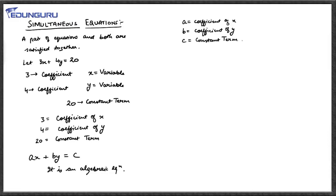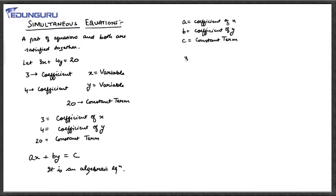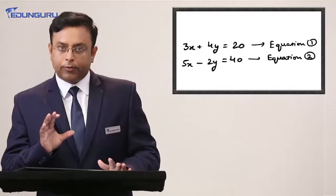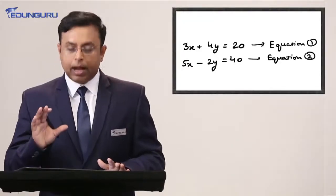These are the details of an equation and its various terminologies. When it comes to simultaneous equations, since simultaneous means together, there must be another equation. I have already written 3x plus 4y is equal to 20. Let me write another one: 5x minus 2y is equal to 40. This is another equation with two variables x and y, with coefficients 5 and -2, and constant term 40.